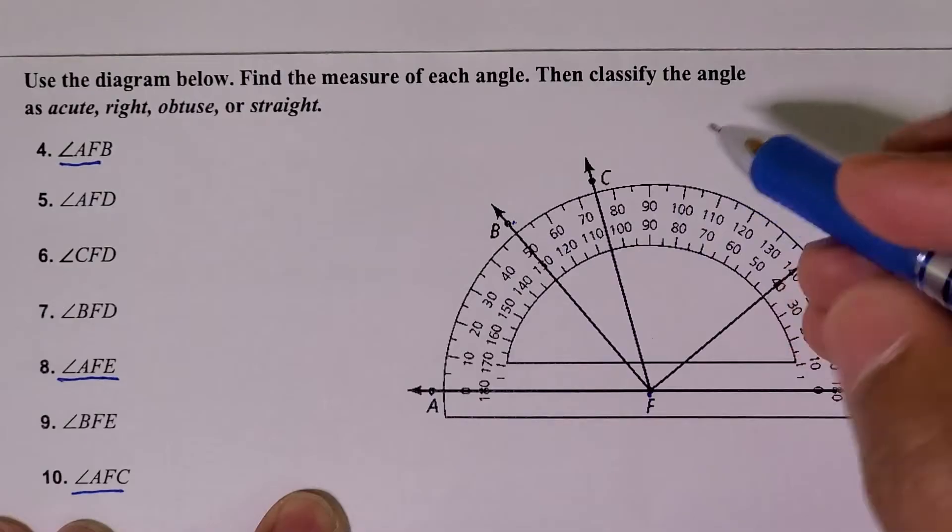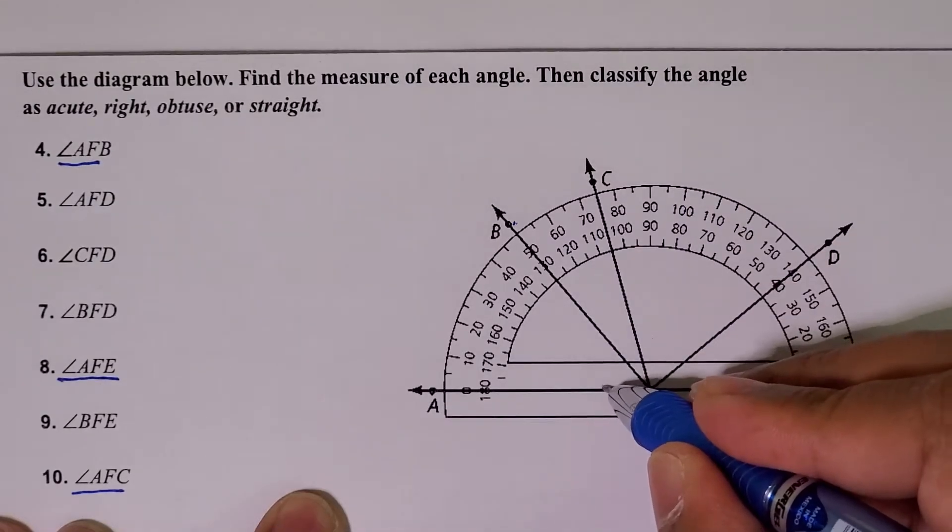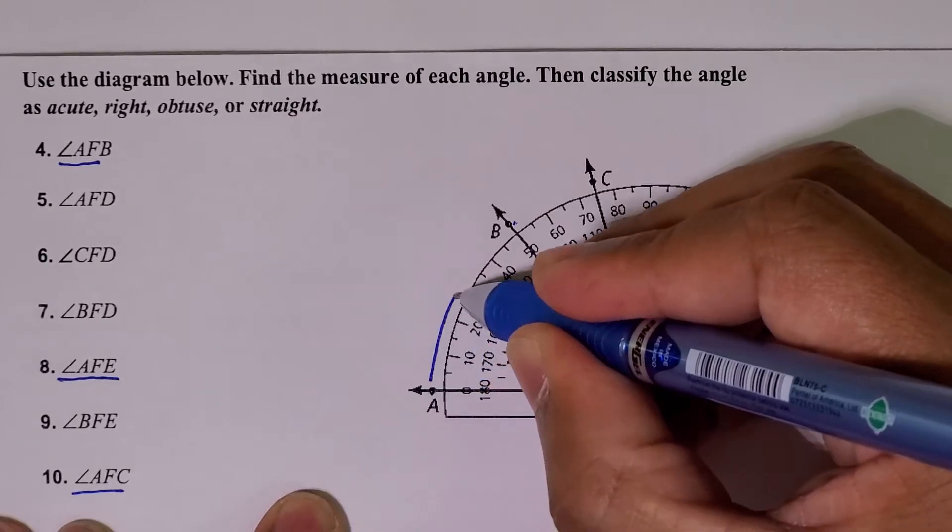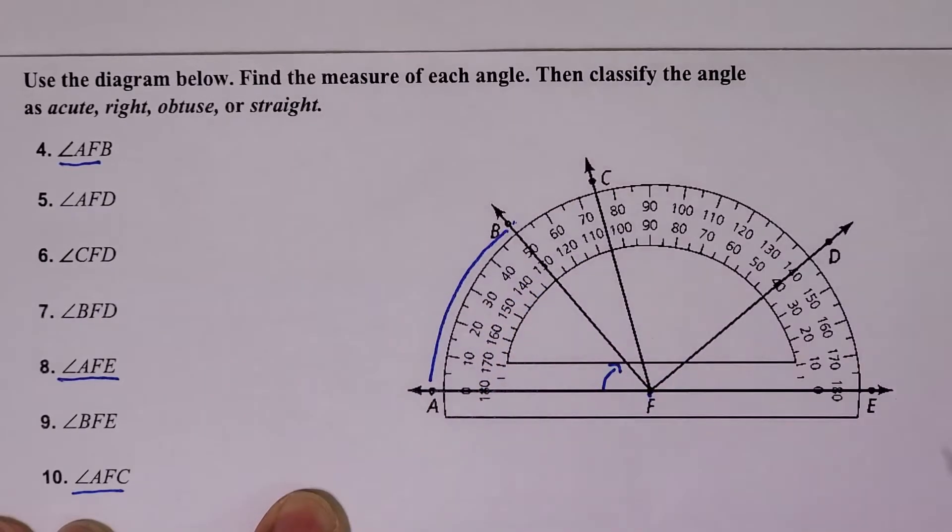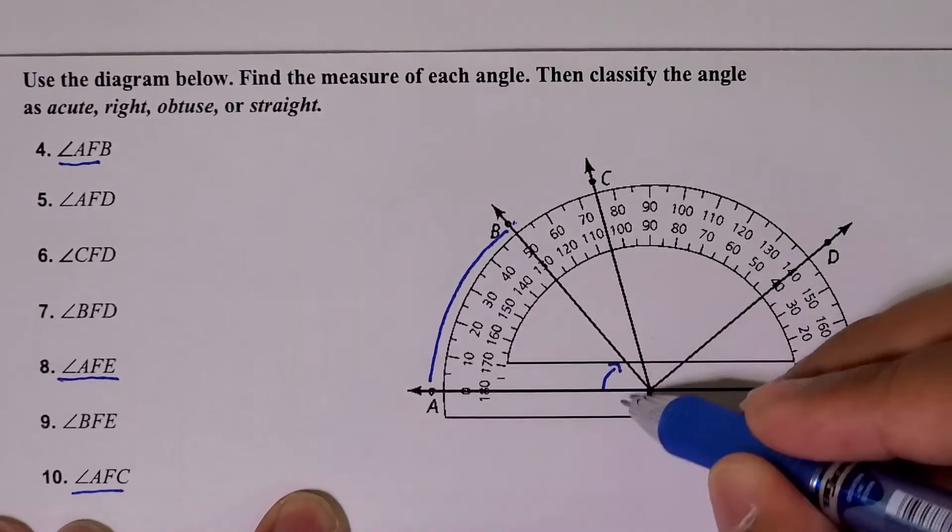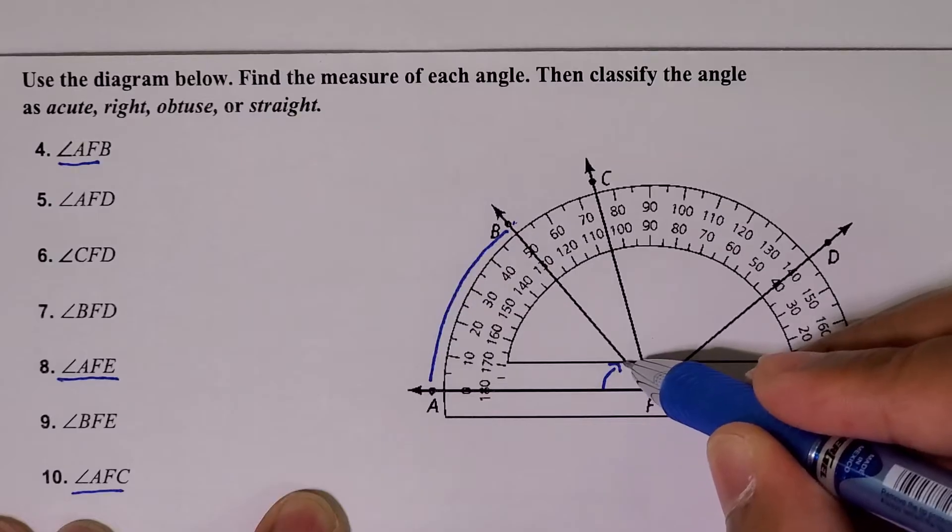So the question is, what is the measure of this angle? How do we use a protractor to help us find the measure of the angle? Notice that this ray is right at zero, and then the angle opens in this direction. If you look at this other ray, it's right at 50 degrees.